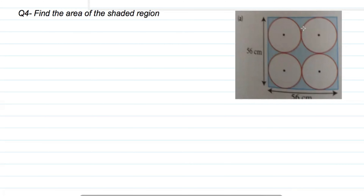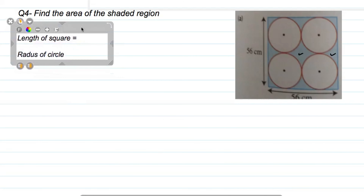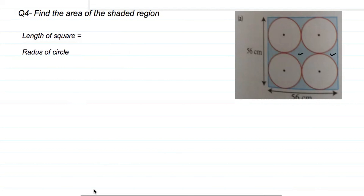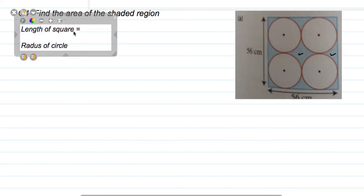The shaded region we have to find — first let's look at this shape. Here we have a square and inside four circles. If we remove the square area from four circles, then the blue shaded region area will remain. So we need the length of square and the radius of the circle. The length of the square is 56 cm.